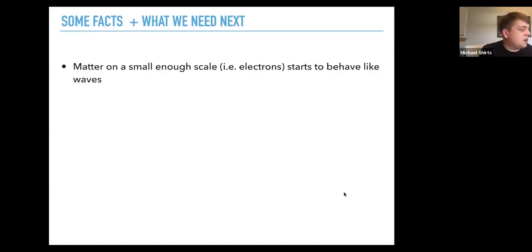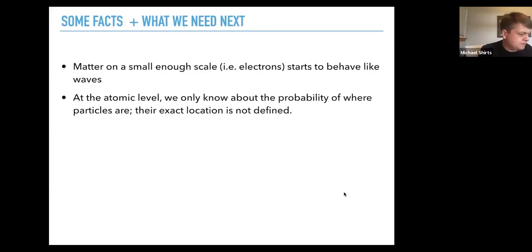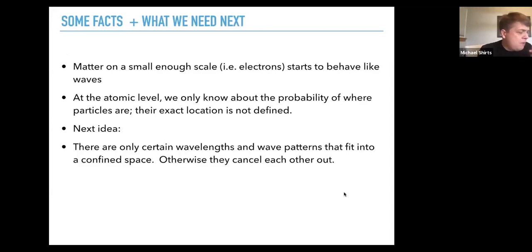So some facts, what we need next. Matter on a small enough scale, like electrons, starts to behave like waves. And at the atomic level, we only know about the probability of where particles are, their exact location is not defined. So one more thing we're going to need is that there's only certain wavelengths and wave patterns that fit into a confined space. Otherwise these waves cancel each other out if they don't have those wavelengths. And therefore only certain electron wave patterns are allowed around an atom or molecule.